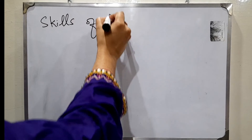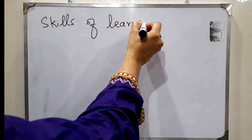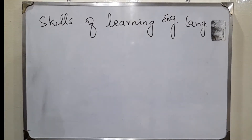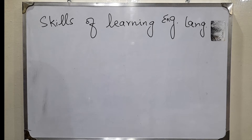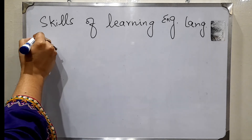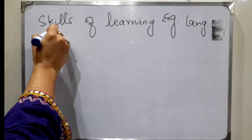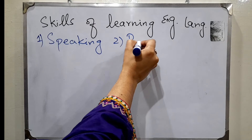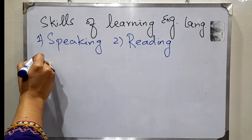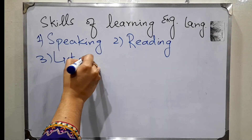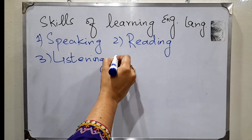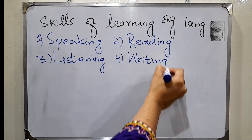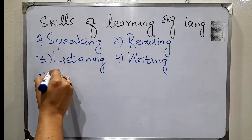The skills of learning the English language are basically 5 in number. Number 1: speaking. Number 2: reading. Number 3: listening. Number 4: writing. And number 5, which is last but not the least: grammar.